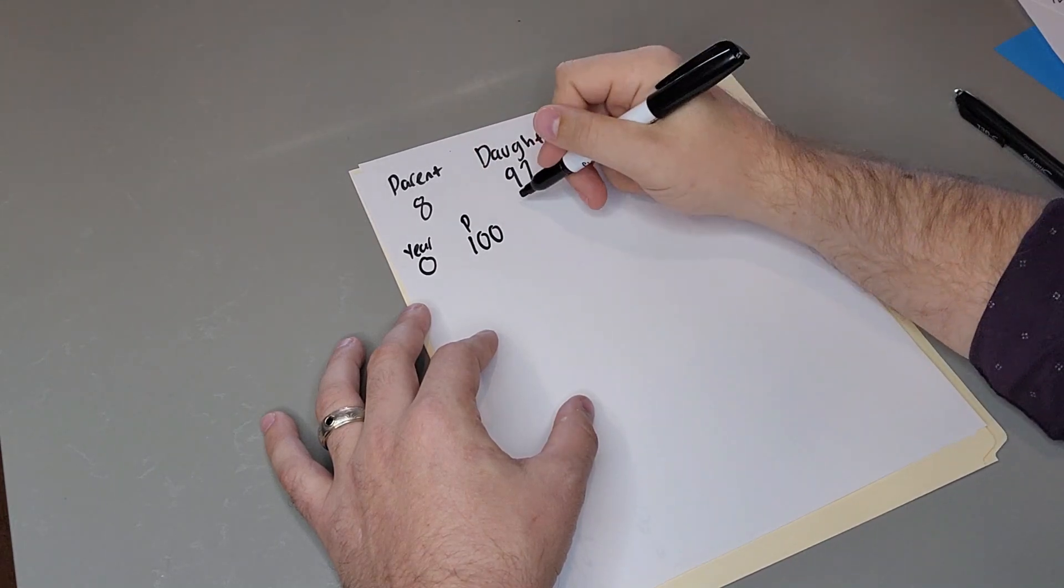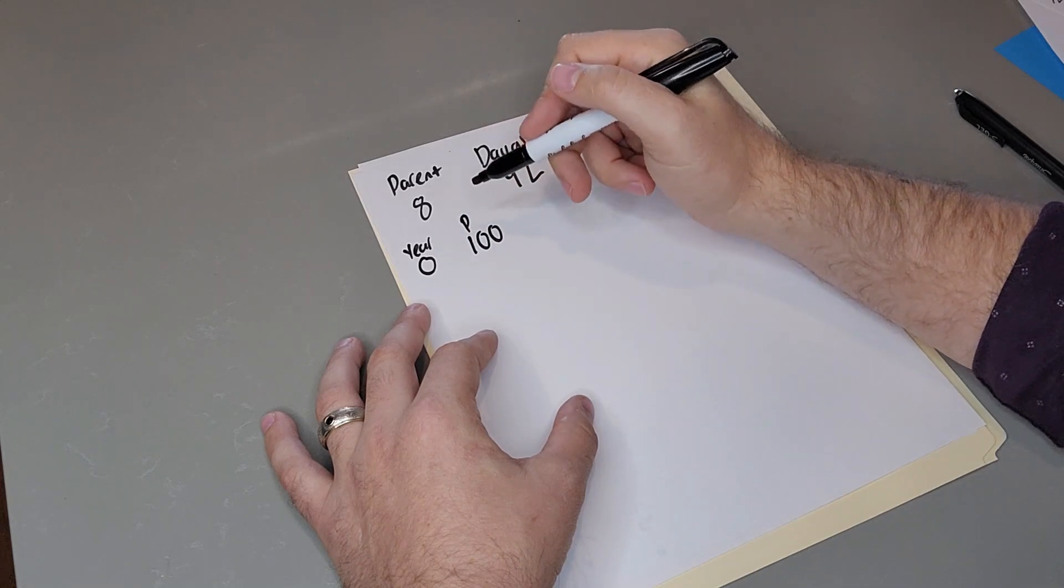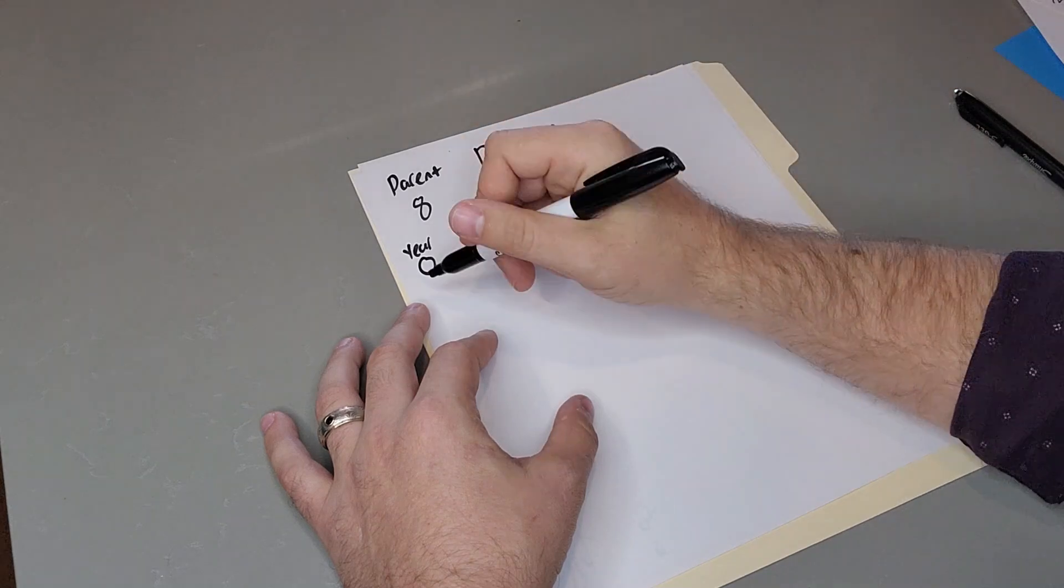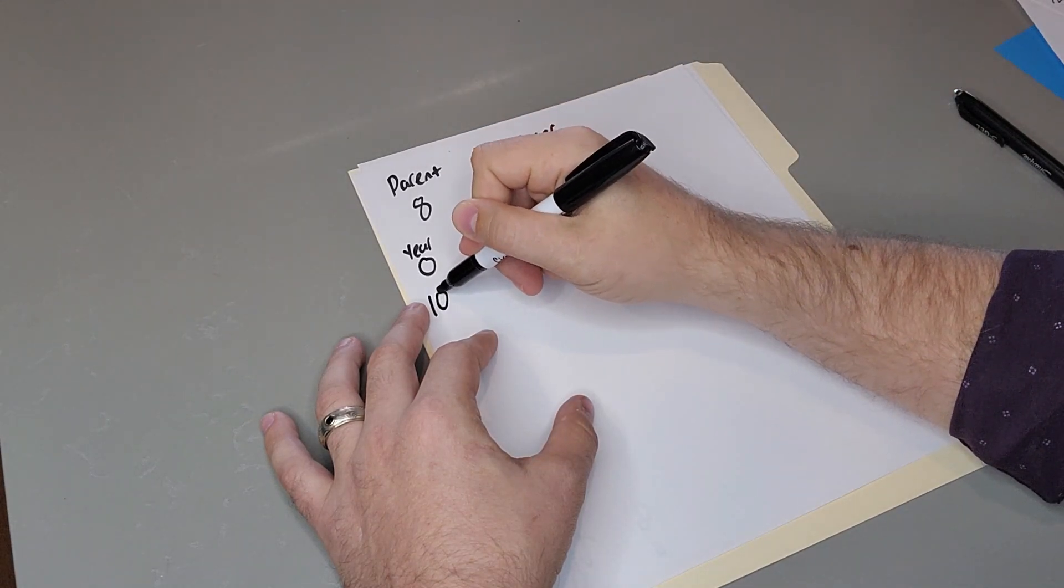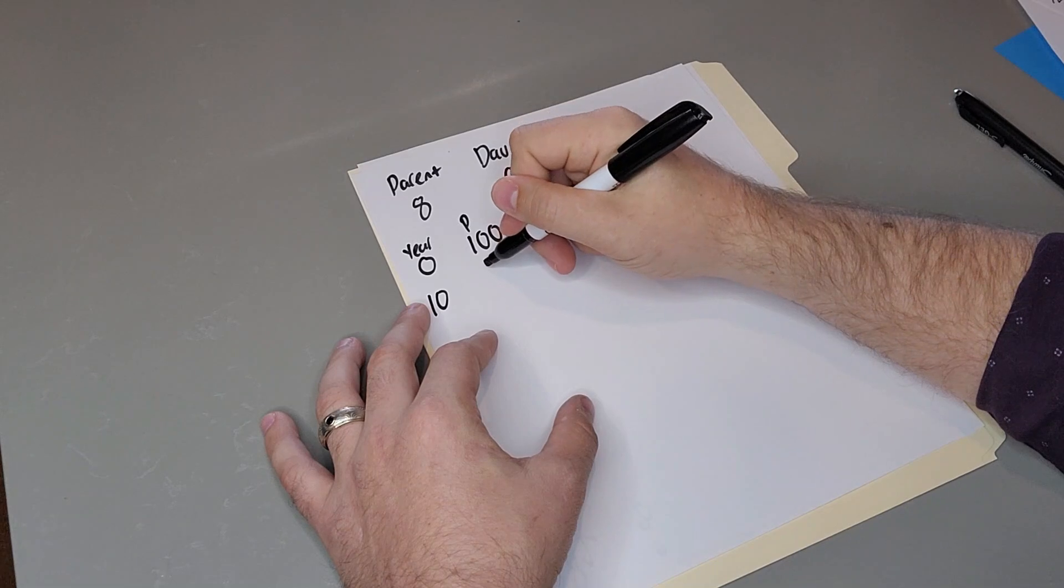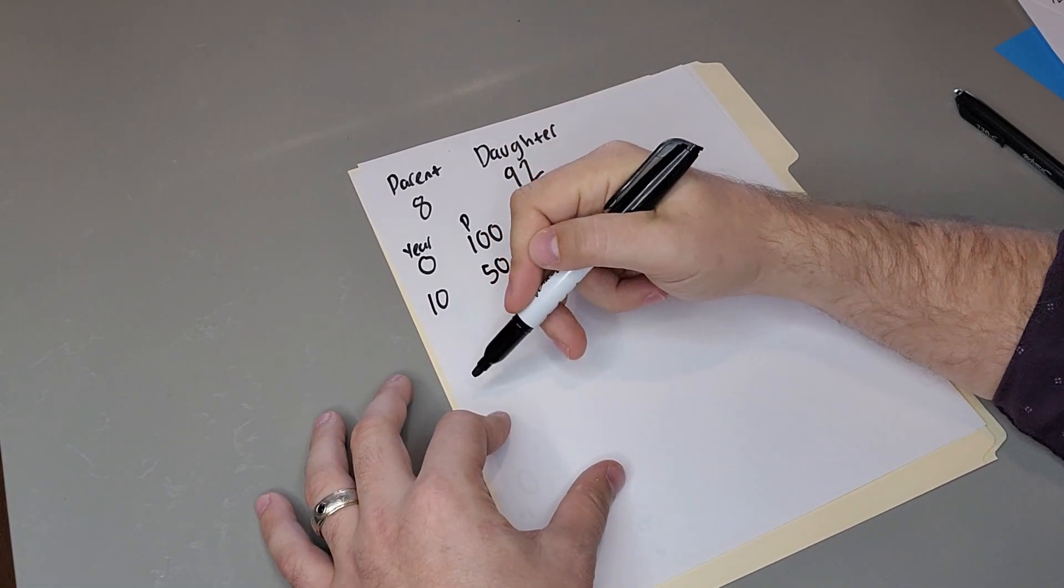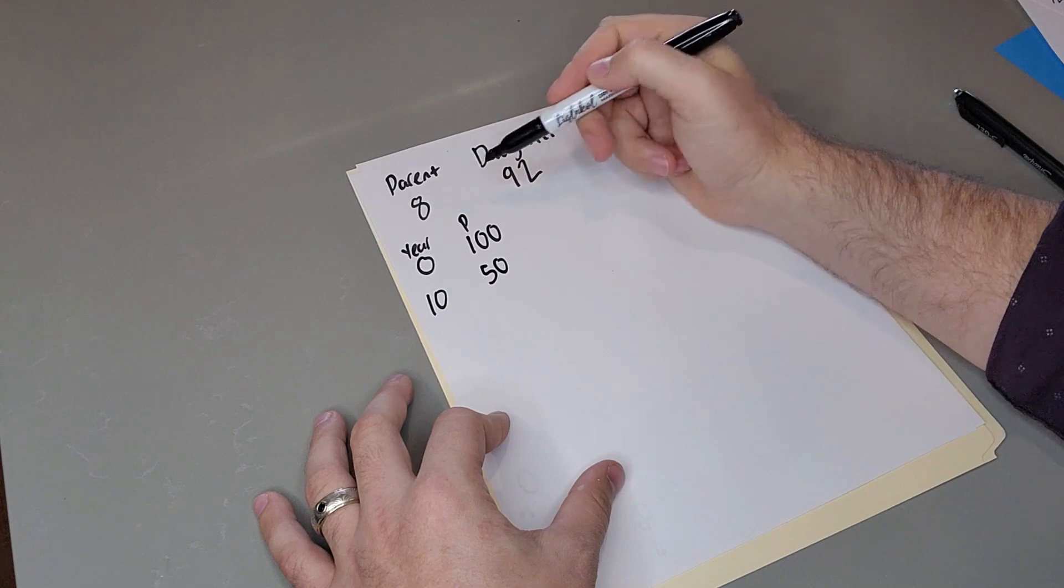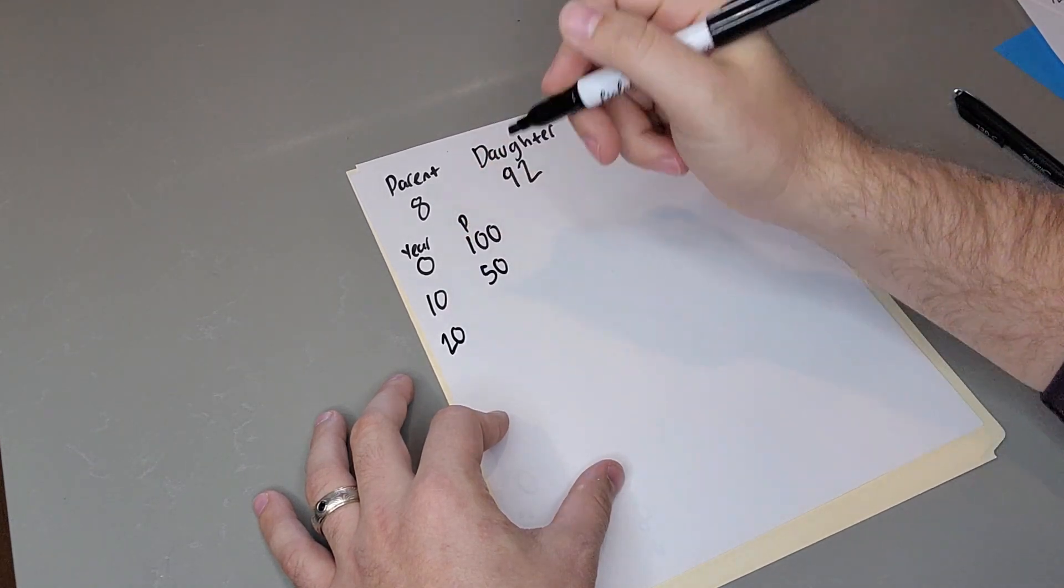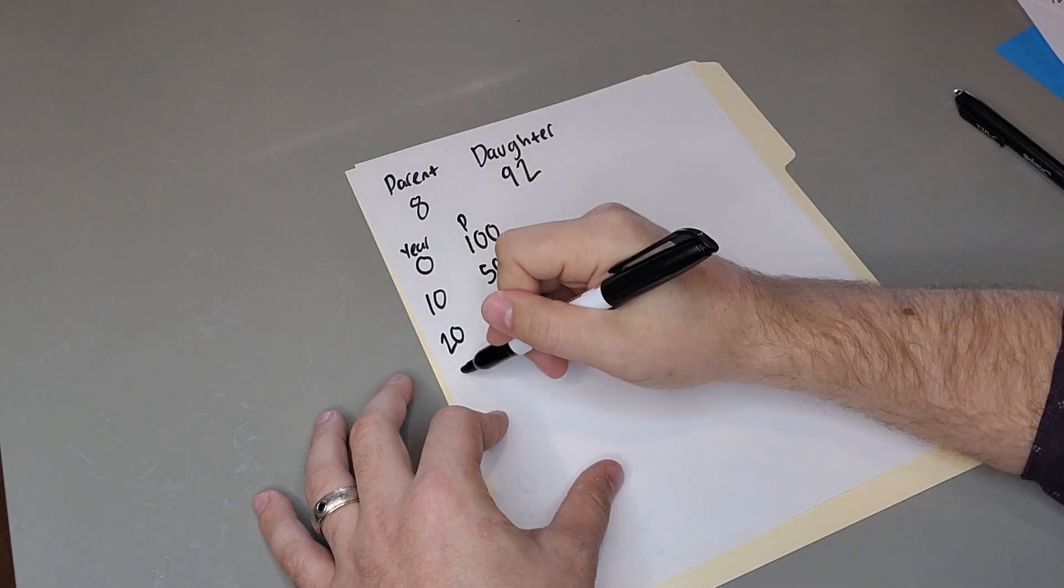If you wanted, you could put another column and say the daughter had zero, but at year zero, there was 100 at the parent, zero at the daughter. Now I'm using a half-life of 10 years, so I'm going to say in 10 years, how much would there have been? That's going to be at 50. And essentially, we're going to keep going until we get to eight. So the next one after this would be at year 20, you'd be at 25, and then at year 30, you would be at 12.5.